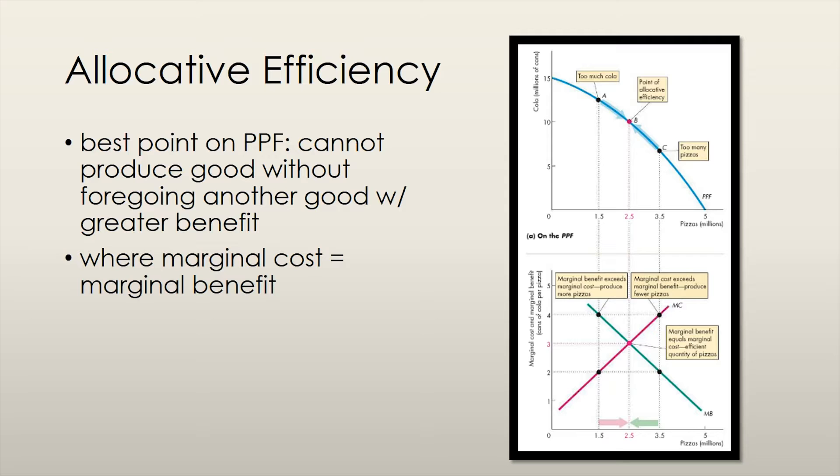Let's define allocative efficiency in concrete terms by using the concepts of marginal benefit and marginal cost. The best point on the production possibilities frontier is the point at which we cannot produce more of one good without giving up some other good that provides greater benefit. The graph on top is simply the production possibilities frontier, and the graph on the bottom is the marginal benefit and marginal cost curves that we have just seen.